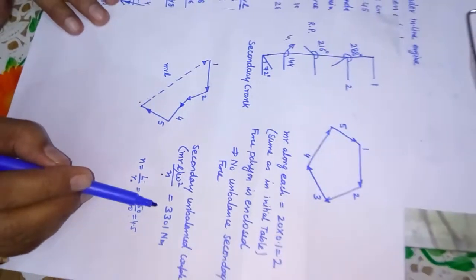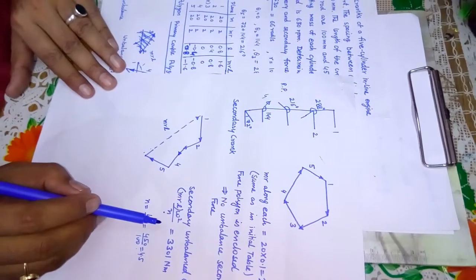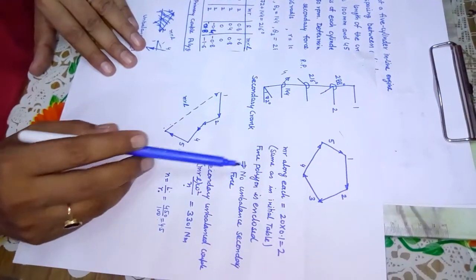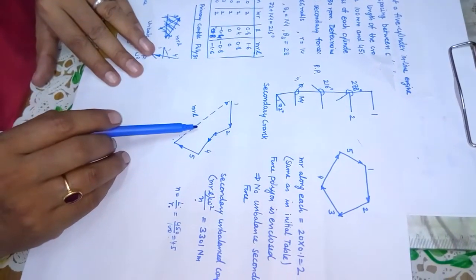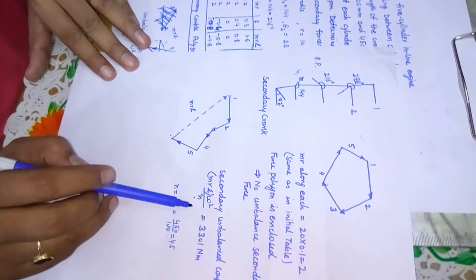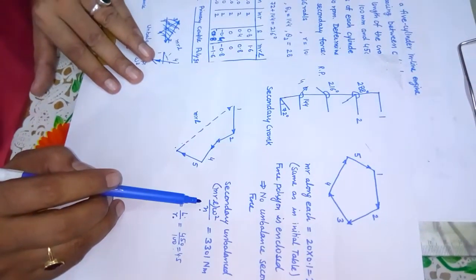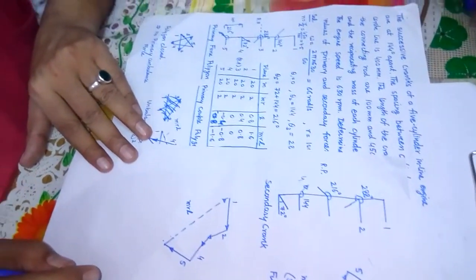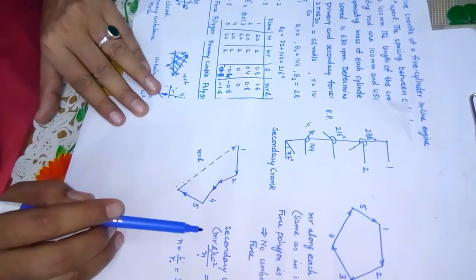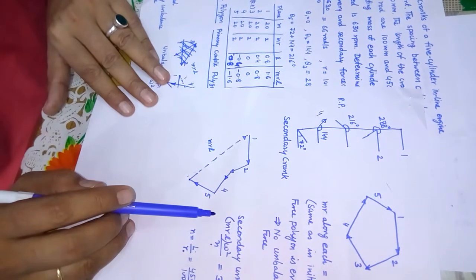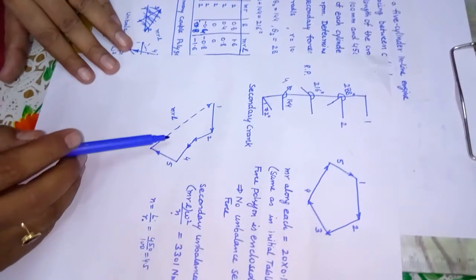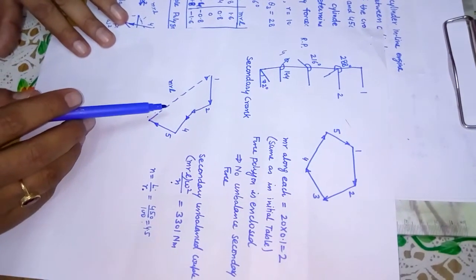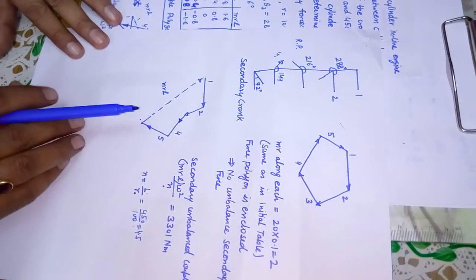In conclusion, for this 5-cylinder inline engine: primary forces are balanced, secondary forces are balanced, primary couple is not balanced, and secondary couple is also not balanced — with calculable magnitudes for each. This is how we can solve problems involving inline multi-cylinder engines for determination of primary forces, primary couples, secondary forces, and secondary couples.